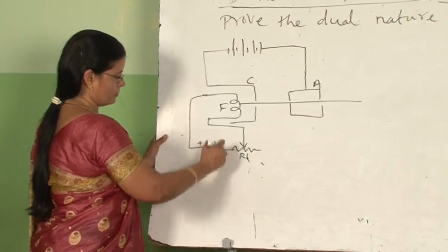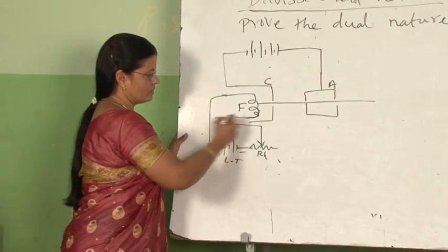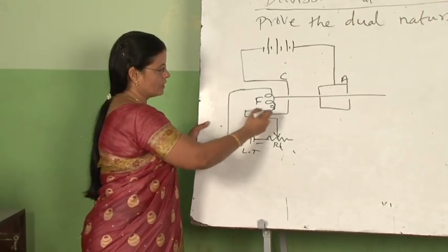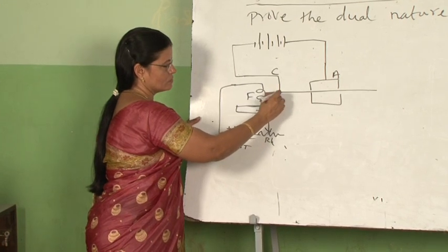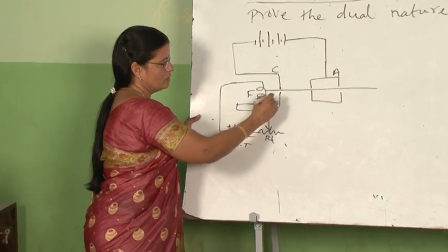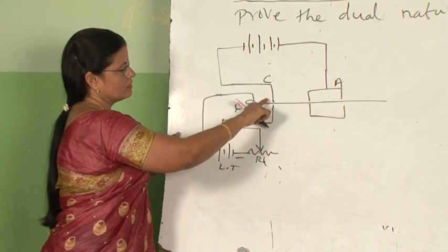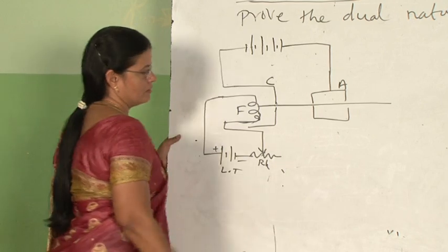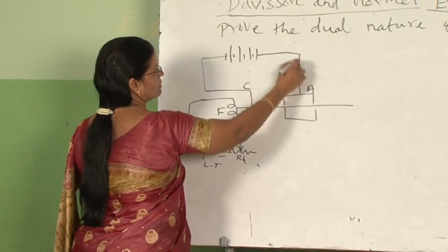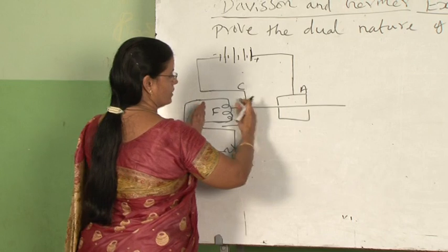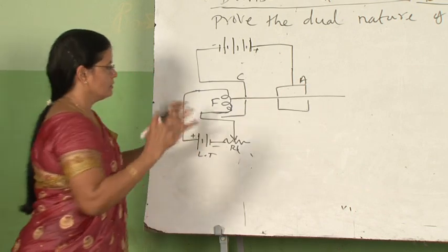Using this battery, the tungsten filament is heated. Due to that thermionic emission, electrons were emitted. To get a fine beam, these electrons were allowed to pass through a hollow cylinder C with a hole. This cylinder C is given a negative potential so that it repels the electrons further into the anode. The anode was also a hollow cylinder given a positive potential to attract the electrons. This combination of cathode C and anode A served the purpose of an electron gun.